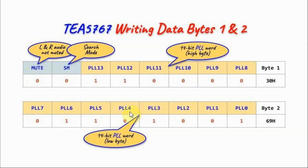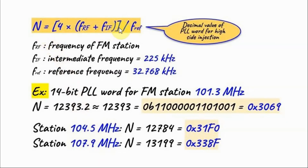Byte 1 and byte 2 from the write protocol are shown here. The mute bit, when set, will mute the left and right audio channels. The search mode bit, when set, will allow the device to search for FM stations. These bits in byte 1 and the byte in byte 2 form the 14-bit phase-locked loop word — this is the high byte and this is the low byte. This 14-bit value represents the frequency of the FM station. We use this equation to calculate the 14-bit PLL value. FRF is the frequency of the FM station, FIF is the intermediate frequency at 225 kHz, and F reference is the external clock frequency at 32.768 kHz. This equation is for high side injection; if we want to calculate for low side, we replace the plus with a minus.